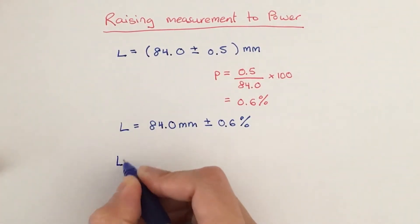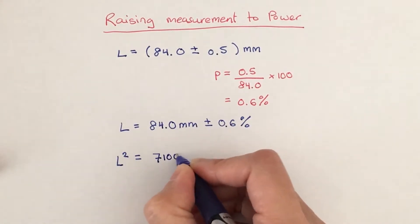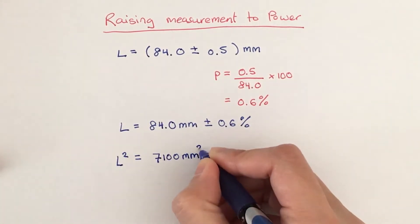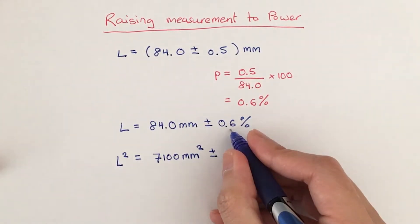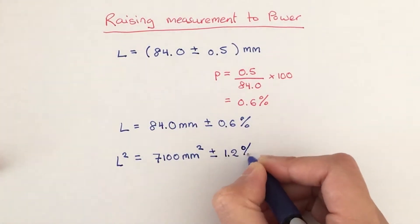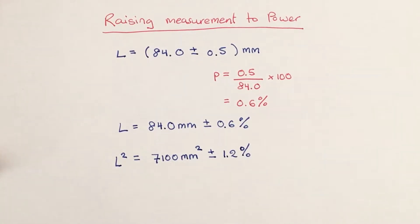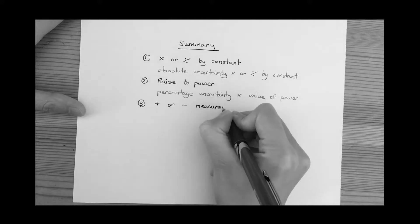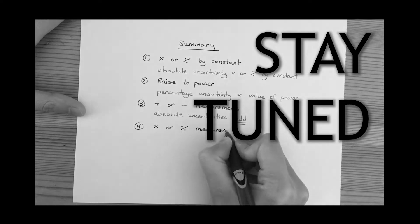We square L, which gives 7,100 millimeters squared. But we don't square the percentage uncertainty. All we do is take the exponent — in this case it's 2 — and multiply the percentage uncertainty by that exponent. So it's 0.6 multiplied by 2, because we've raised L to the power of 2. At the end of this video, I'm going to summarize everything into 4 points so that you can memorize it very easily.